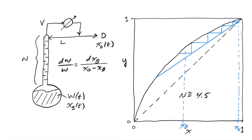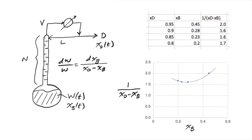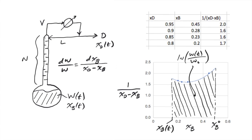This corresponds to making a series of parallel operating lines, starting at XD, and in each case stepping off N stages to obtain XB for that value of XD. After this list of XD and XB values is obtained, you can make a plot of 1 over XD minus XB as a function of XB and fit this function to a polynomial in Excel. This polynomial can be integrated analytically to solve for W versus XB.